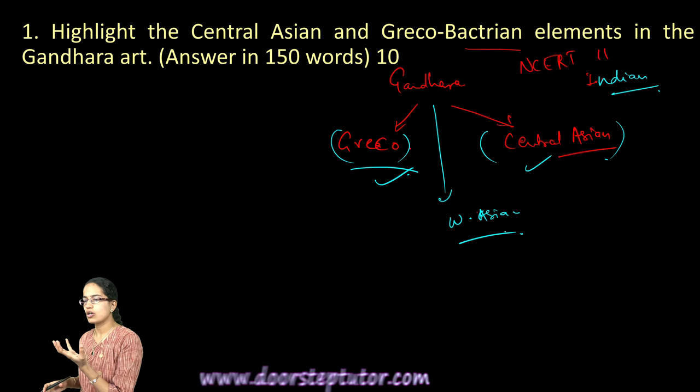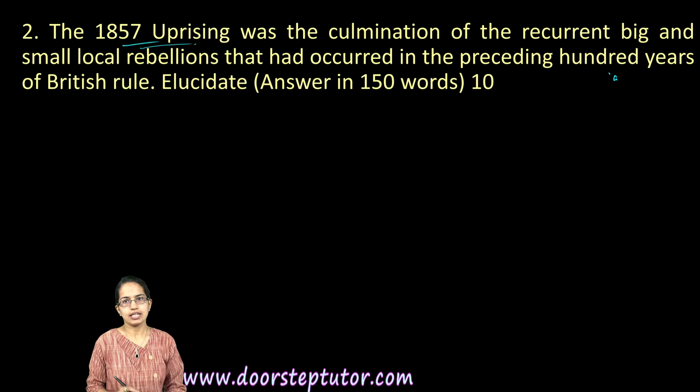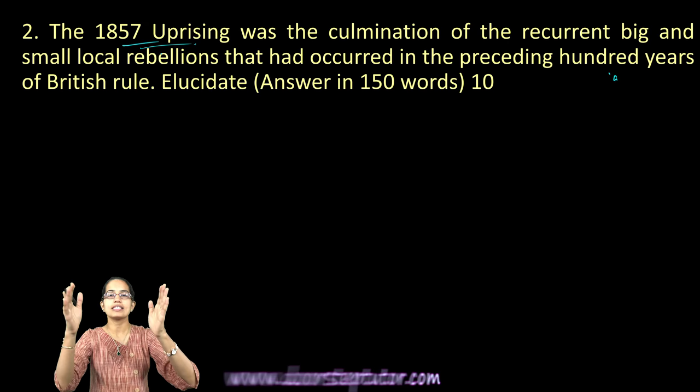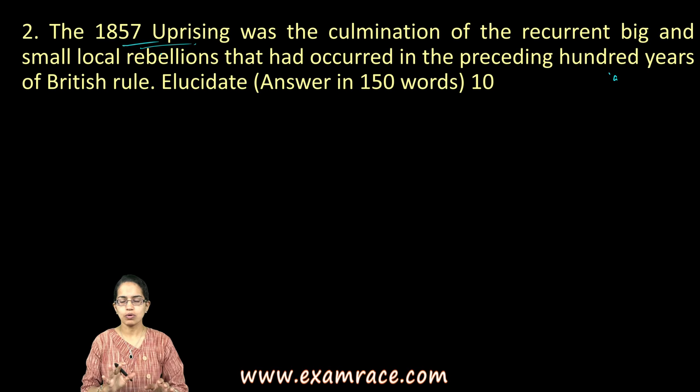The 1857 uprising was the first revolt that acted as a leading path for the independence movement in India. This uprising witnessed more or less 40 major and hundreds of minor rebellions that took place across the country.